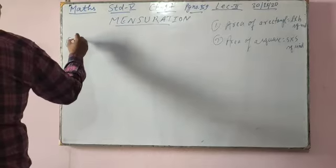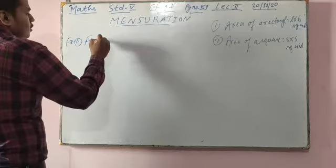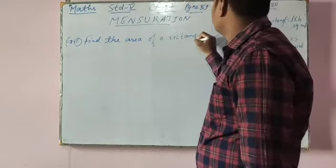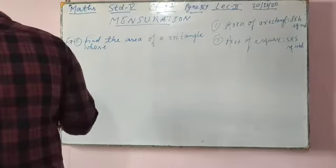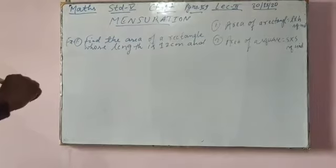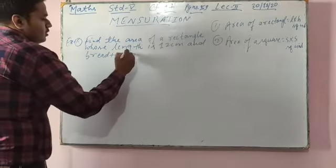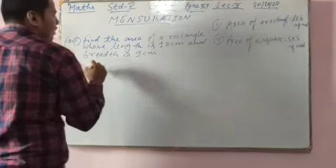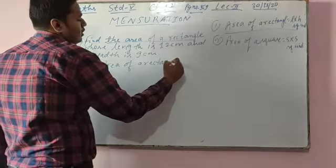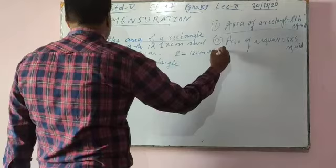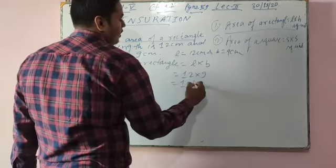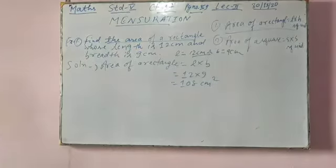Coming to example number 1: find the area of a rectangle whose length is 12 cm and breadth is 9 cm. So formula is L into B, so 12 into 9, which gives 108 cm square. Very easy.